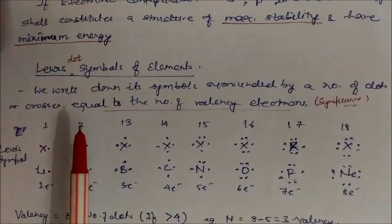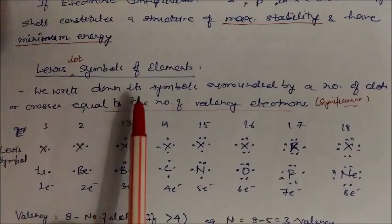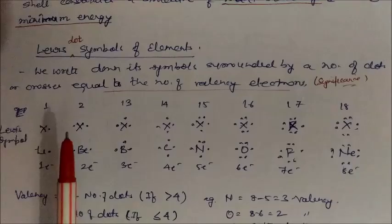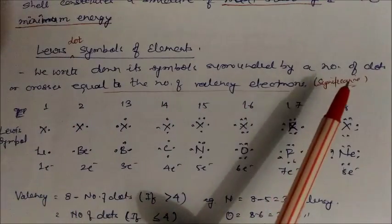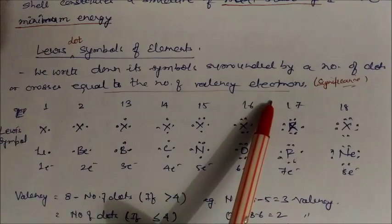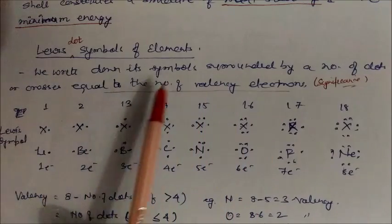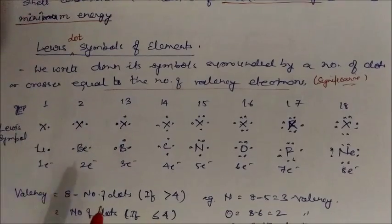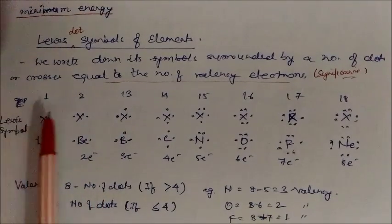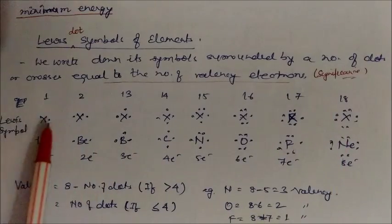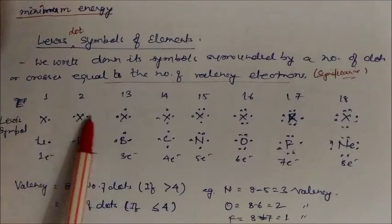Now we will look at Lewis dot symbols of elements — how we can draw them. Just write the symbol of the element and surround it with dots or crosses equal to the number of valence electrons. For elements in group 1, valence electrons = 1; group 2, valence electrons = 2. For group 13: 13 minus 10 = 3 valence electrons. For group 14: 4 valence electrons.